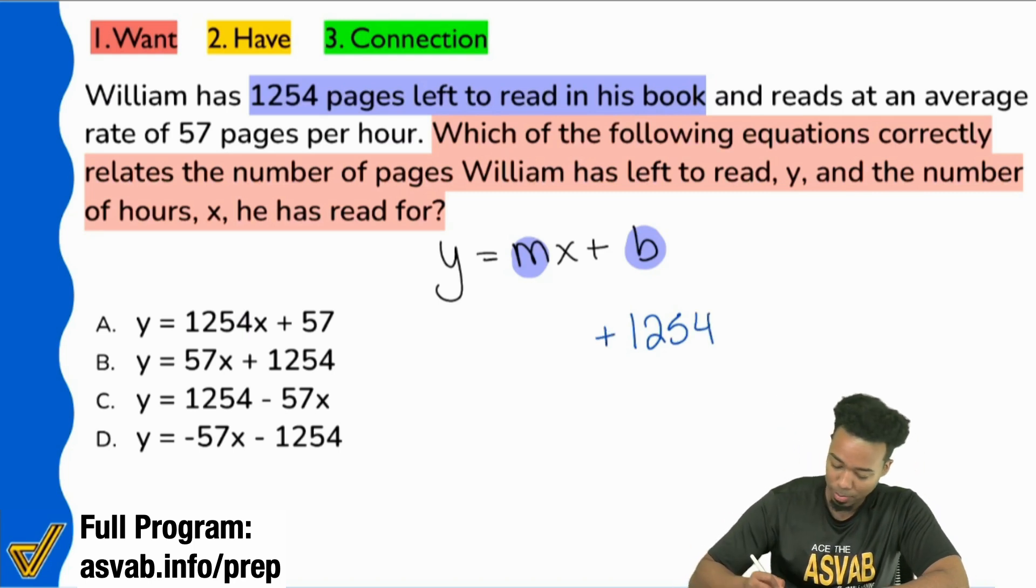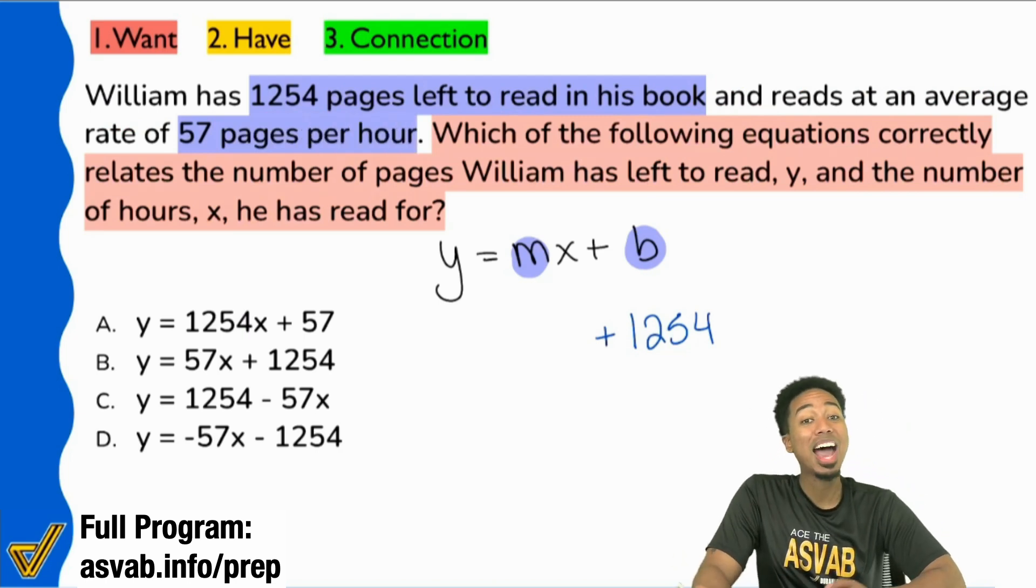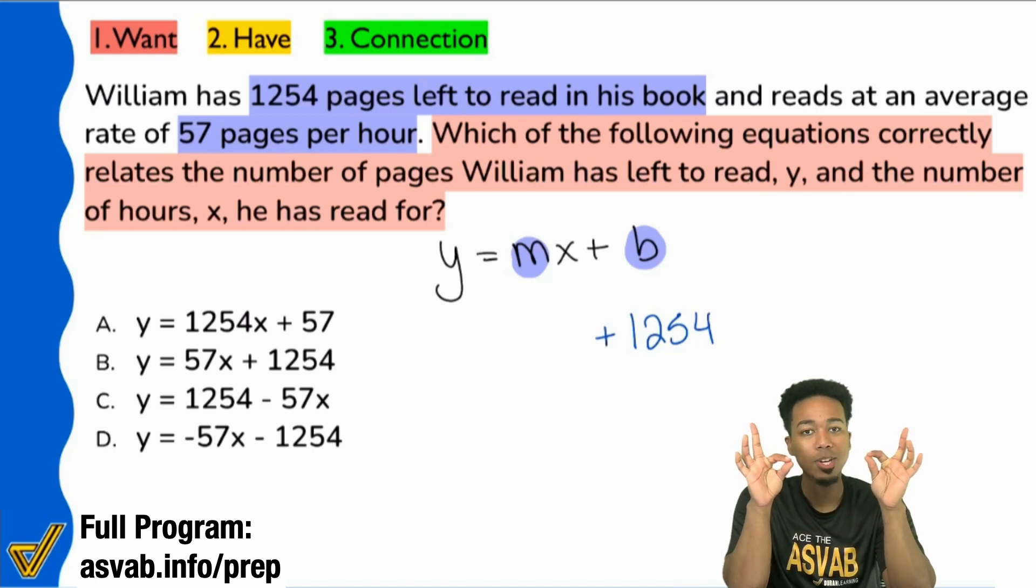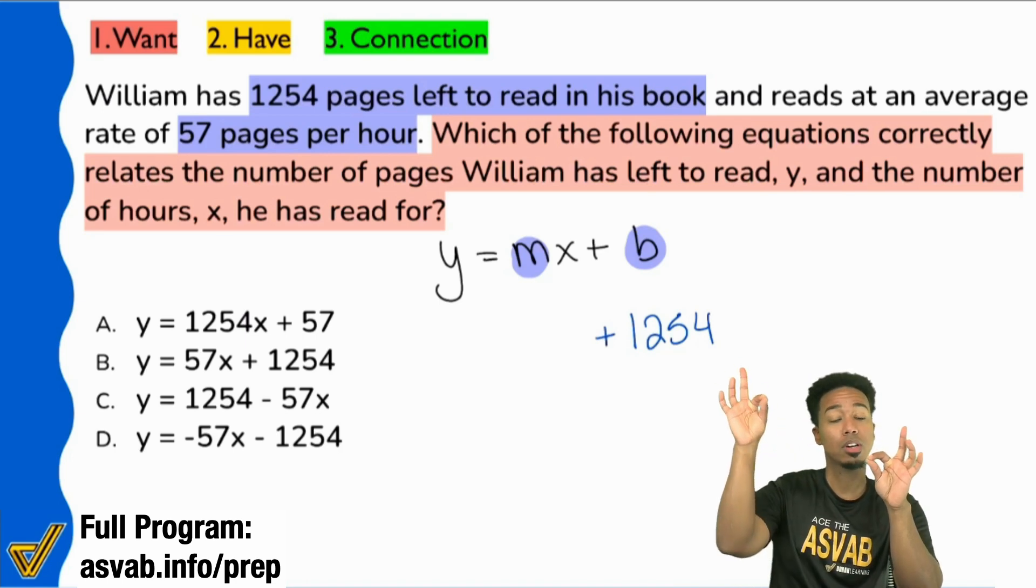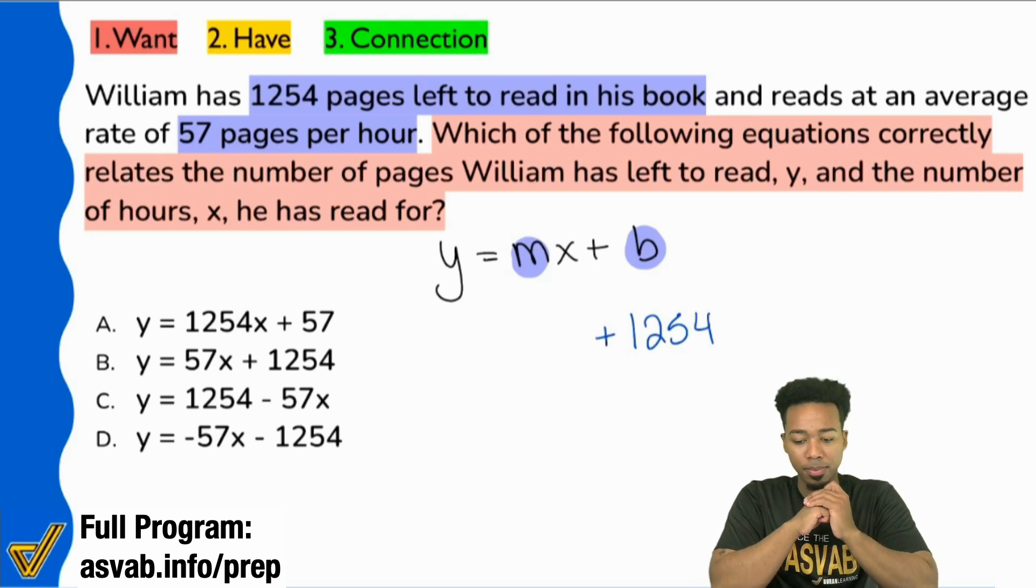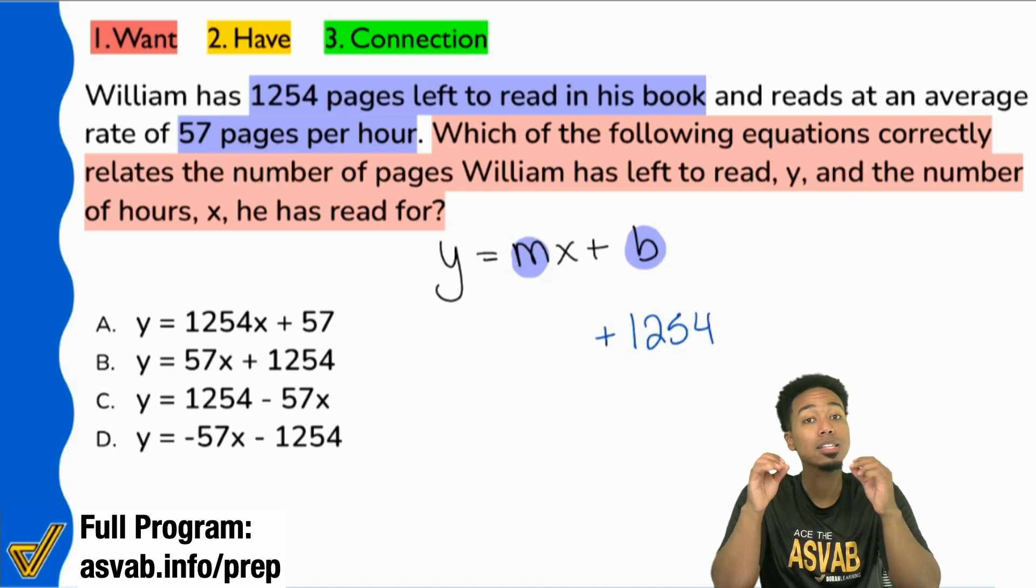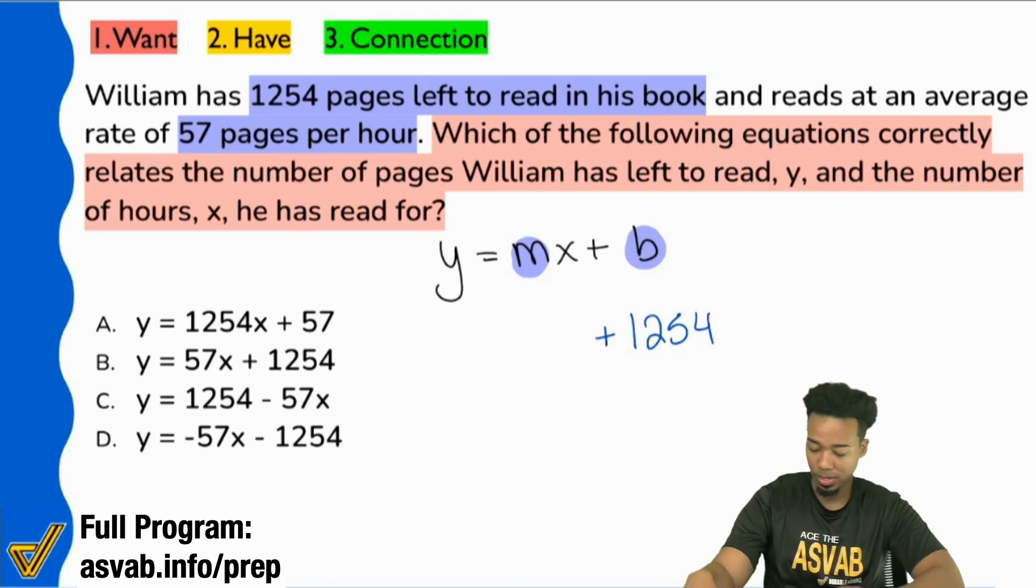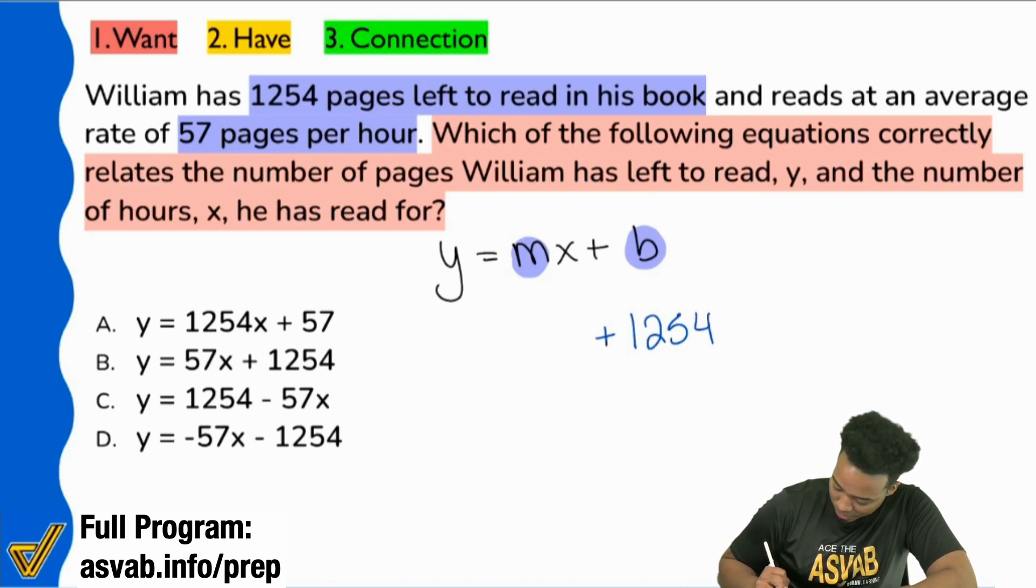Now m, let's see what that's going to be. We see that it says reads at an average pace or rate of 57 pages per hour. But we had to ask ourselves, everybody, if we have this many pages left to read and we are reading 57 pages every hour, is that a positive 57 because we're going up or a negative 57 because we're going down? Which one is it? Yeah, it's negative because the number of pages we're going to have left as we continue reading, it's going to go down. So that's going to be a negative 57x.